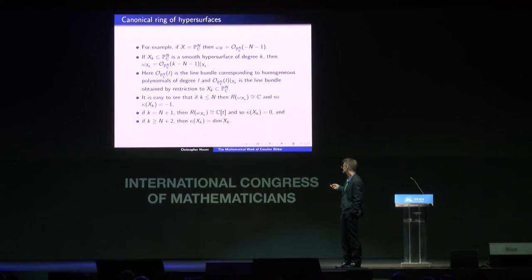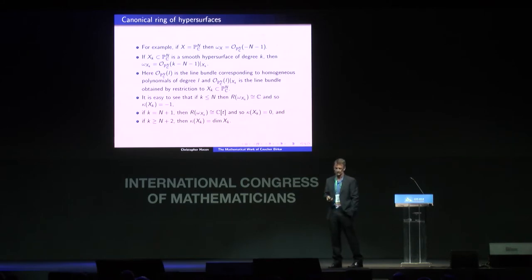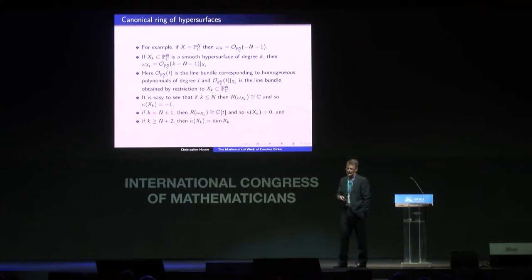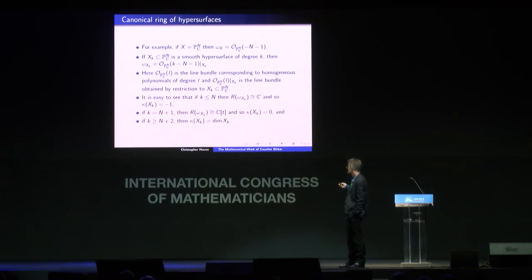One can also consider smooth hypersurfaces of degree k — smooth sub-varieties defined by one homogeneous polynomial of degree k. In this case, the canonical line bundle corresponds to homogeneous polynomials of degree k minus n minus one, restricted to your sub-variety. There are clearly three different kinds of behavior depending on whether this number is negative, zero, or positive. When k is less than or equal to n, the canonical line bundle has negative degree, so any positive tensor power would not have interesting sections, and so the canonical ring is simply one copy of the complex numbers in degree zero, giving Kodaira dimension minus one.